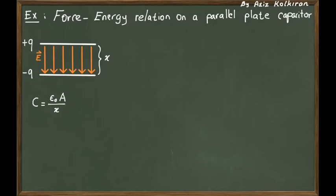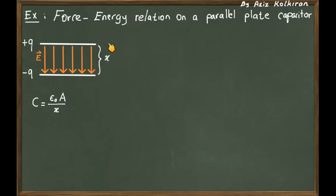First of all, the capacitance of a parallel plate capacitor with respect to its surface area and the distance between the plates is given by: C = ε₀ × A divided by the distance between the plates. I keep the distance between the plates as a variable x, because the force between the plates will change with respect to this distance.